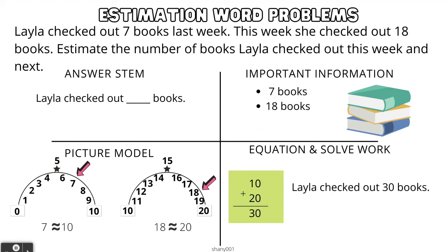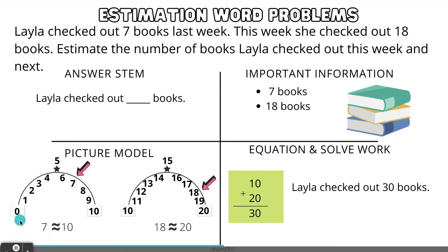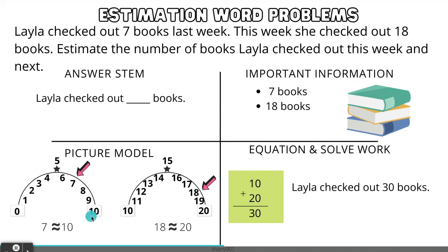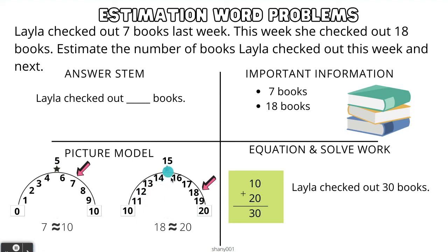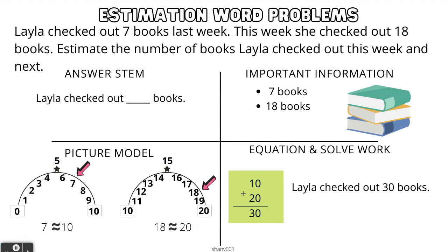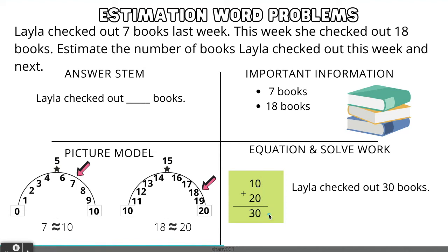For our picture model, we will use the rounding hill method. The number seven is between zero and ten. On the rounding hill, seven rounds to ten. Next, we have the number 18. 18 is between the numbers 10 and 20. We can clearly see that 18 is closer to 20, so 18 rounds to 20. For our equation, we add 10 plus 20, and the answer is 30. Our answer stem is: Layla checked out 30 books.